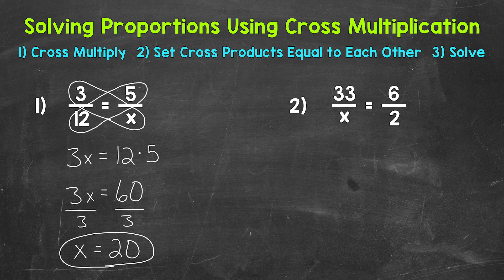One more thing I want to mention about using cross multiplication to solve proportions: don't get too held up on what numbers to multiply first or which diagonal you should put on which side of the equal sign. It will all work out the same either way. Just make sure to multiply diagonally and have the equal sign in between your cross products.